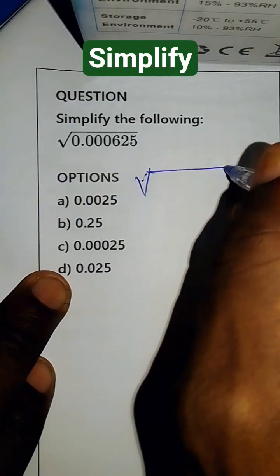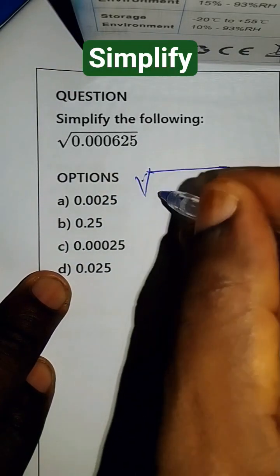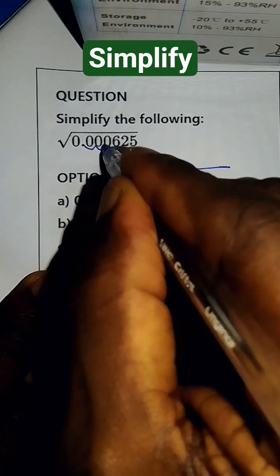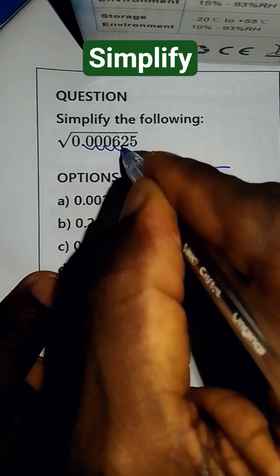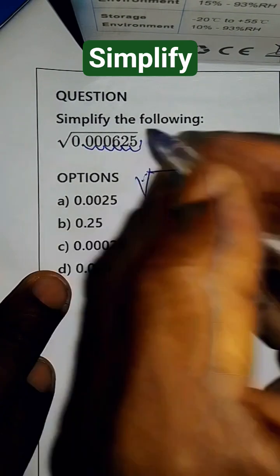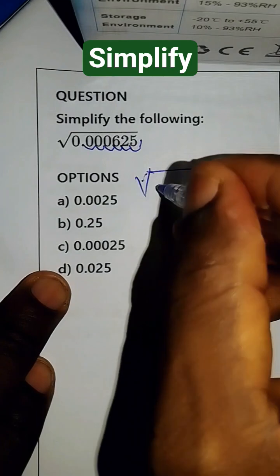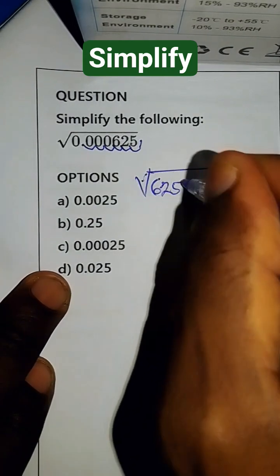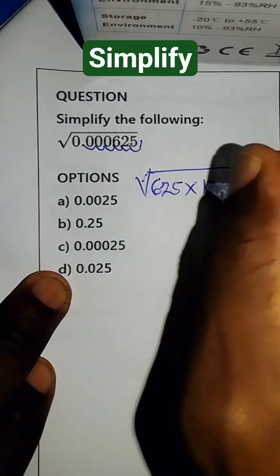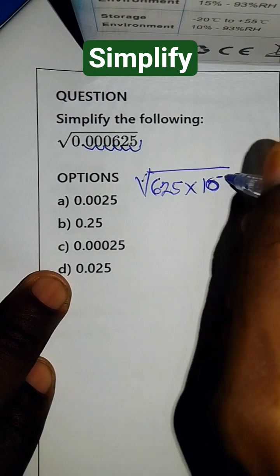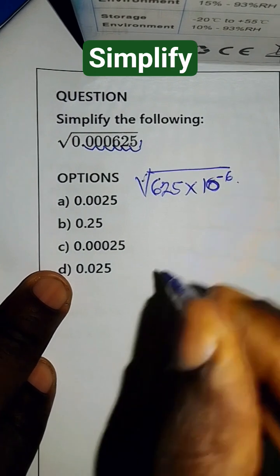We take the square root. We move the decimal point 1, 2, 3, 4, 5, 6 — that is 6 places — so this equals 6.25 times 10 raised to the power of minus 6.